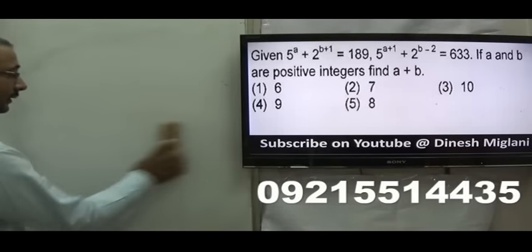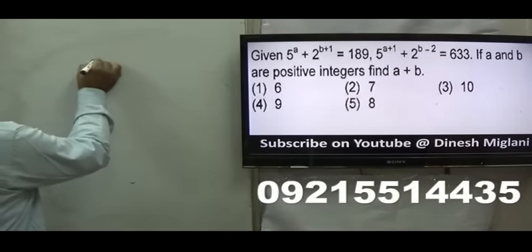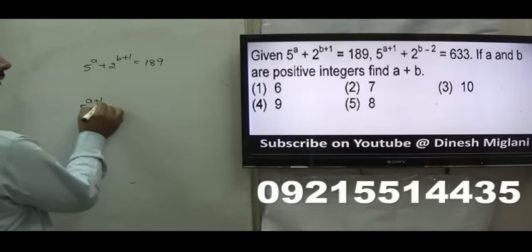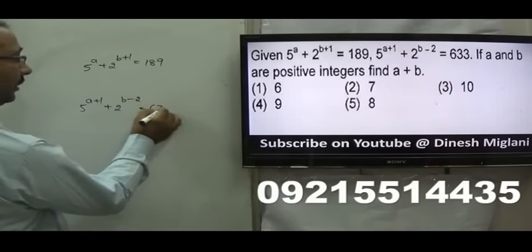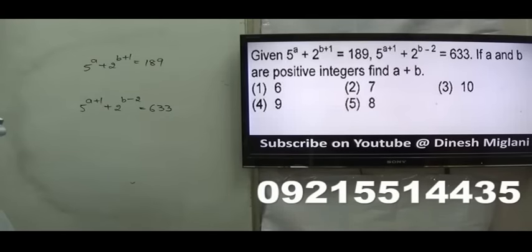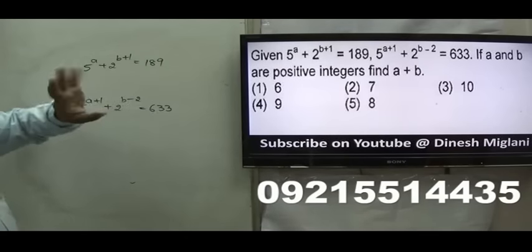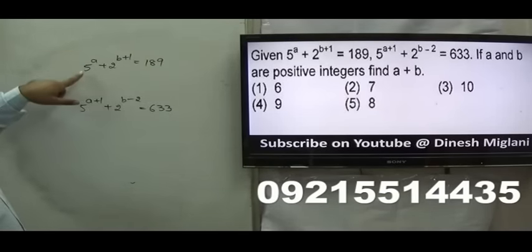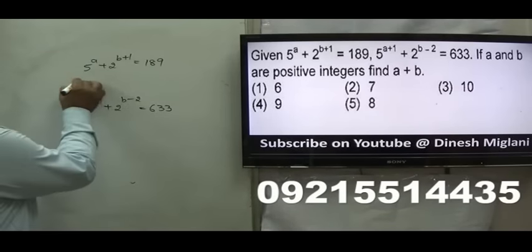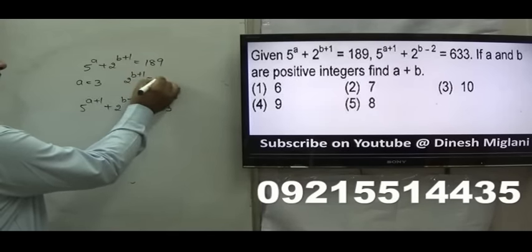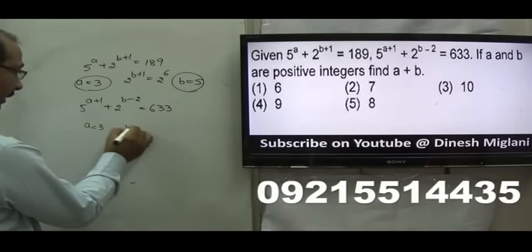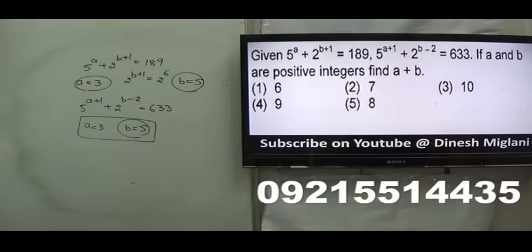Next question: it is given that 5^A + 2^(B+1) = 189 and 5^(A+1) + 2^(B−2) = 633. I have to find A + B. We know A and B are positive integers. Let A = 1: 5 + 2^(B+1), not matching 184. Let A = 2: 25, leaving 164, not a power of 2. Let A = 3: 125, leaving 64 = 2^6, so B + 1 = 6, meaning B = 5. So A = 3, B = 5, and A + B = 8.